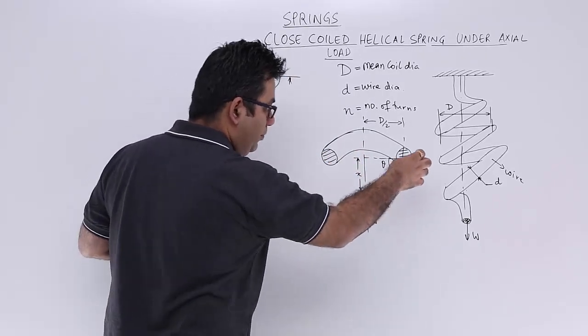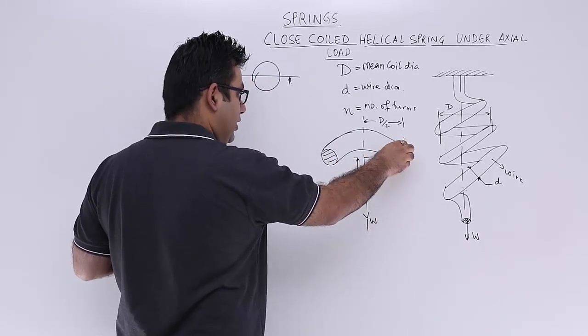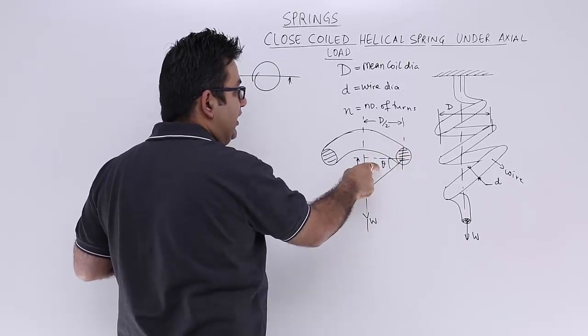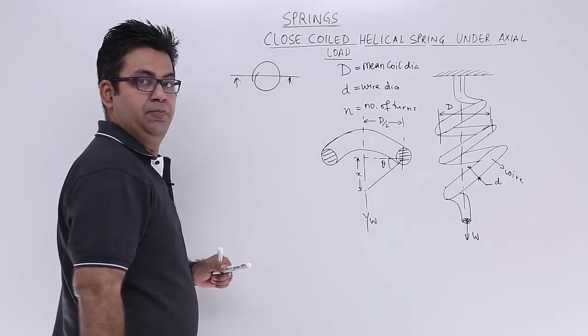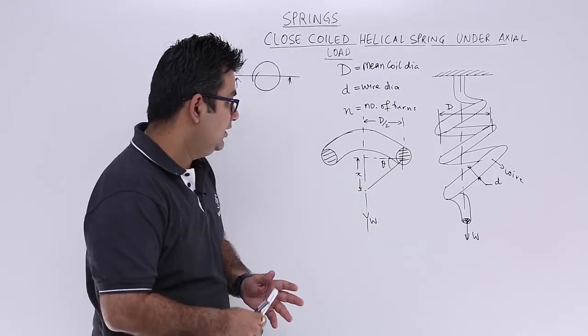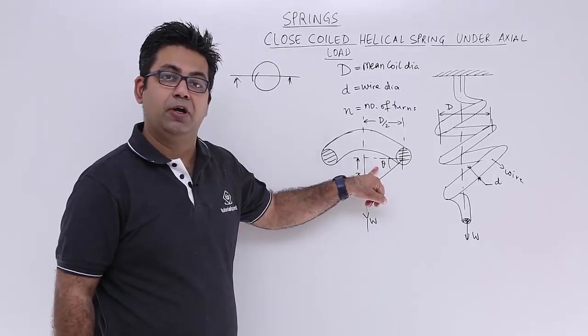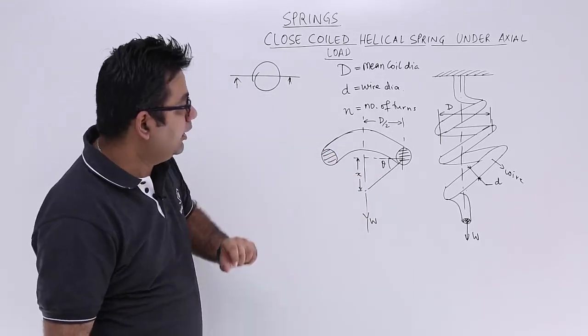So I'll repeat, when you pull it down, this wire rotates or it twists by an angle theta and it moves down. So due to the twisting, there is an angle of twist theta coming into picture and there is some linear displacement also.